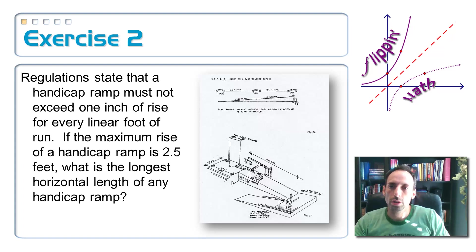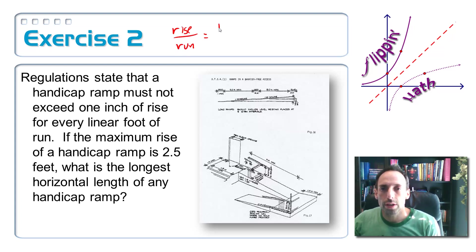So here's a practical slope question. Regulations state that a handicap ramp must not exceed one inch of rise for every linear foot of run. True story. If the maximum rise of a handicap ramp is 2.5 feet, what is the longest horizontal length of any handicap ramp? And now, think of this. Think of someone that's in a wheelchair. Why would they not want a steeper ramp than this? Just think about trying to get up that ramp. Okay, anyway, so since this rate of change, this ratio basically is in, it says rise over run, of course, rise over run. And this says one inch to every one foot. But my rise is in feet. It's in 2.5 feet. Well, that's not a problem. How many inches are there in a foot?